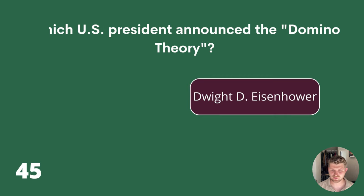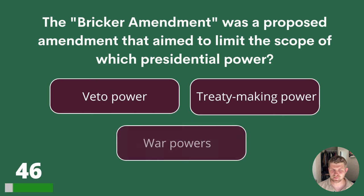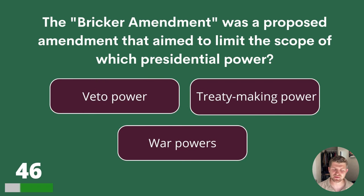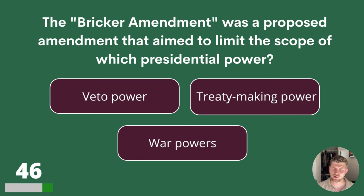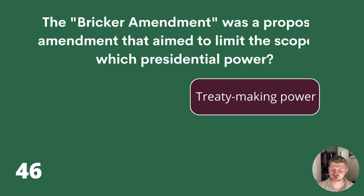Five questions left! Question 46. The Bricker Amendment was a proposed amendment that aimed to limit the scope of which presidential power? Veto power, treaty-making power or war powers? The answer is treaty-making power.